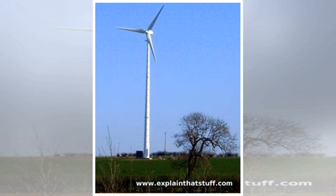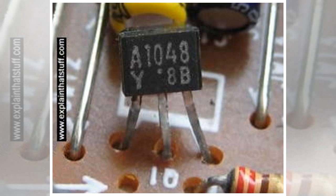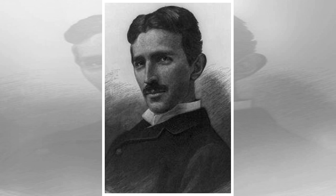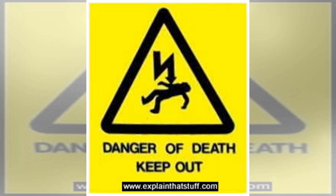In an alternating current, or AC, circuit, the electrons reverse direction many times each second. The bigger appliances in your home use a different kind of electricity called alternating current. Instead of always flowing the same way, the electrons constantly reverse direction, about 50 to 60 times every second. Although you might think that makes it impossible for energy to be carried round a circuit, it doesn't.